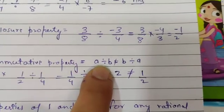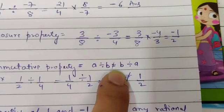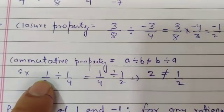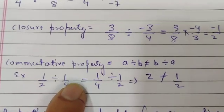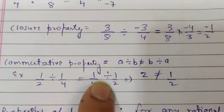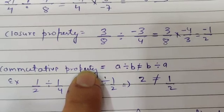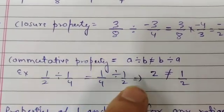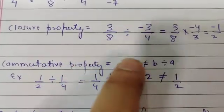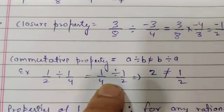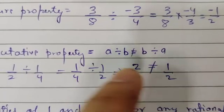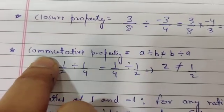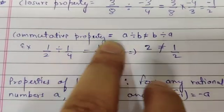Commutative property: A divided by B is not equal to B divided by A. तो हम इसको करके देखते हैं। अगर हमने example में लिया है 1 upon 2 divided by 1 upon 4, और इसका order change करा — 1 upon 4 divided by 1 upon 2. Commutative property में order change करते हैं, तो वही हमने किया। जब दोनों को individually solve किया, left hand side का answer आया 2, और right hand side का answer आया 1 by 2. तो they are not equal — 2 is not equals to 1 by 2 — यानि कि commutative property is not satisfied under division.